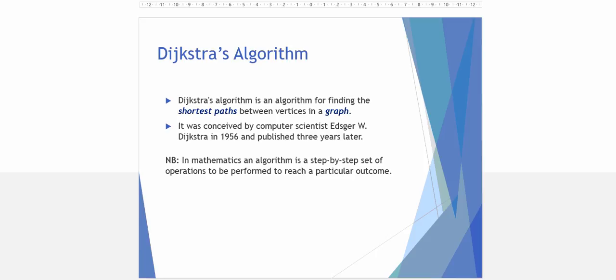Dijkstra's algorithm is used to find the shortest path between two vertices in a network or a graph. It was designed by Mr. Dijkstra in 1956, and algorithms, like all algorithms, are used in mathematics and computer programming to provide step-by-step operations to perform a particular outcome.